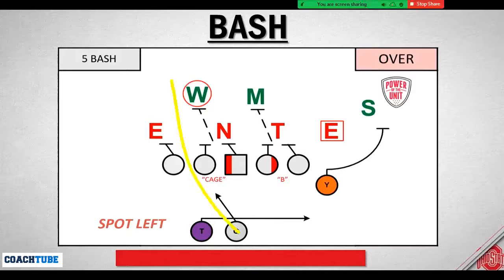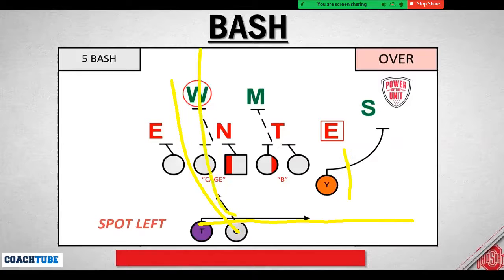What we have here is a quarterback zone read play to the left. The quarterback is the runner on a zone play. The base concept is a speed sweep in the opposite direction. So we're reading the defensive end — if the defensive end is an up-the-field player and takes away the jet sweep, we have a tight zone run with the quarterback up the middle.